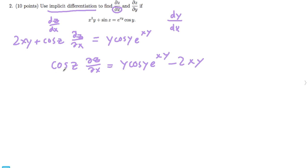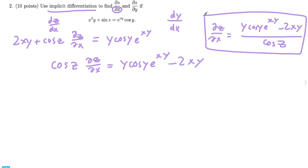And then you can just divide both sides by cosine z to get what delta z over delta x is. So y cosine y e to the xy minus 2xy over cosine z. So that is your partial with respect to x.